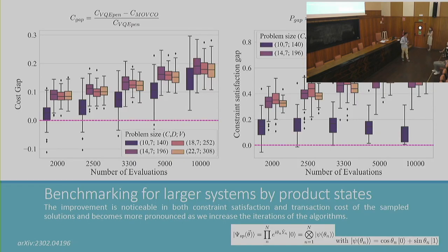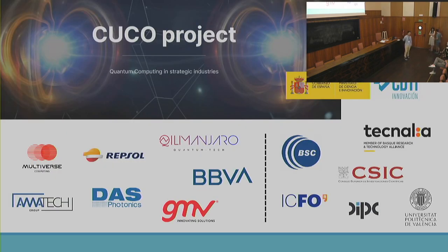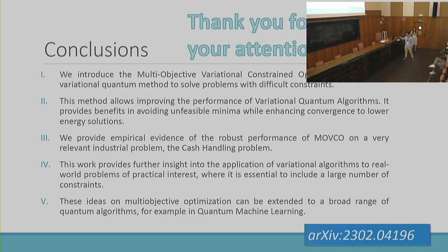We also performed experiments with larger systems using different ansätze, and again obtained better results both in energy and constraint satisfaction. This is a collaboration between the QuanFolk group at the Institute of Fundamental Physics and the BBVA team. This collaboration is part of the CUCO project, a collaboration between companies and public institutions to do research on quantum computing in Spain. Thank you very much — here are the conclusions.